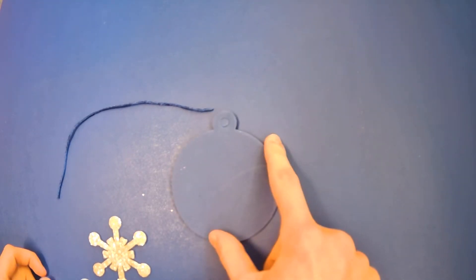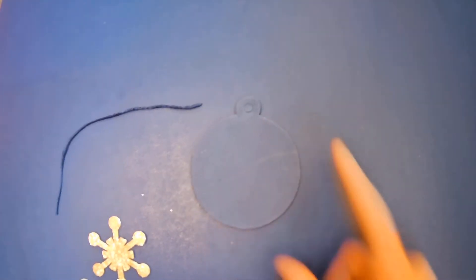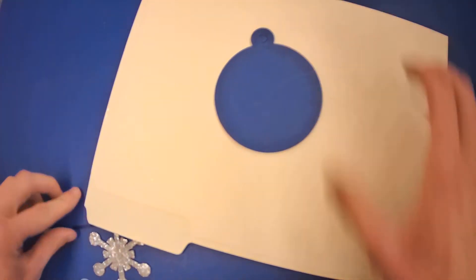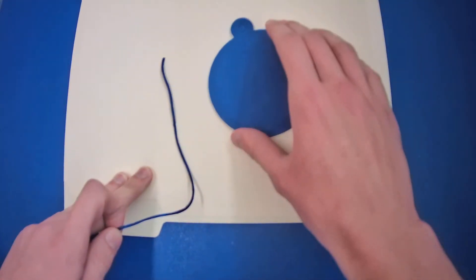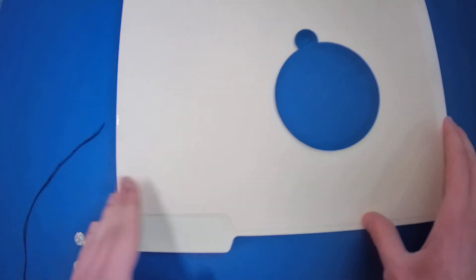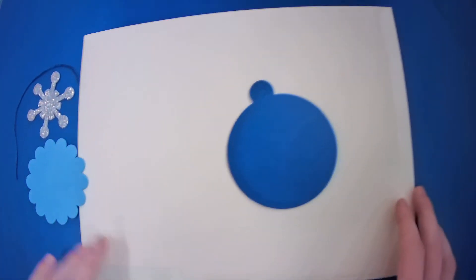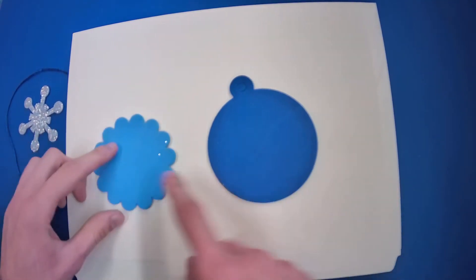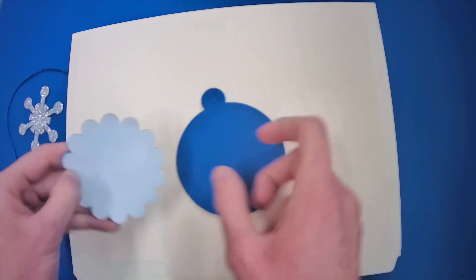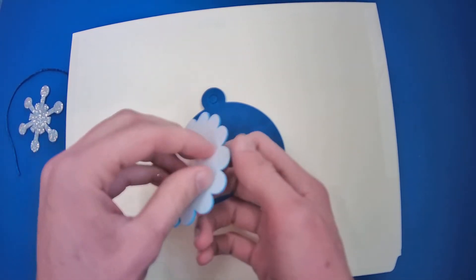Start with your big ornament base right here. Let me put down a different surface so you guys can see better. Start with your ornament base right here. Then, you're going to want to add this weirdly edged blue one.